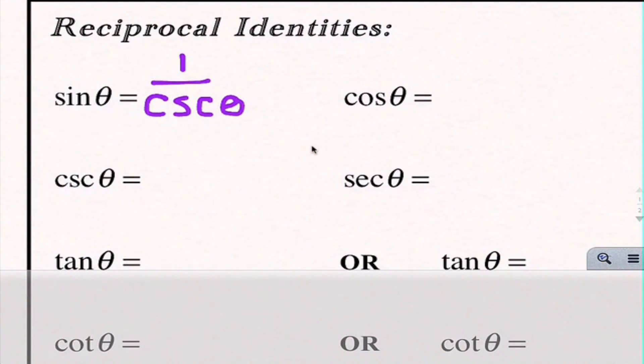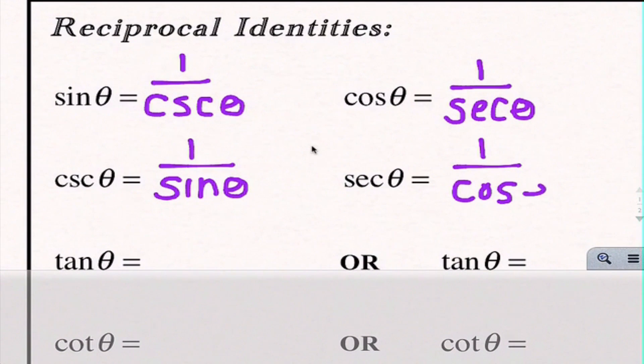Cosine is our next one. So the reciprocal of cosine we learned was secant. I'm going to write cosine of theta is equal to 1 over secant of theta. Likewise, cosecant's reciprocal is sine, so I'm going to write that as 1 over sine theta. And secant's reciprocal is cosine, so 1 over cosine. These are our first four reciprocal identities.